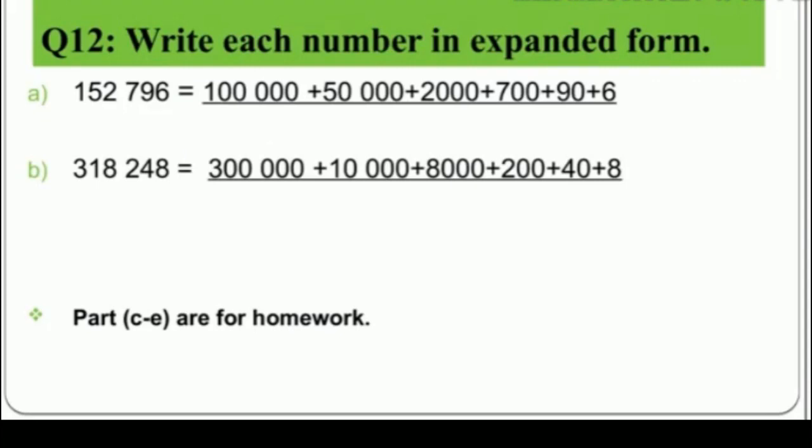Question 12: write each number in expanded form. Part A: 152796. The easy method: take the first digit (1), replace all remaining digits with zeros → 100000. Put a plus sign. Now take the second digit (5), replace the remaining digits with zeros → 50000. Put plus. Next digit 2 → 2000. Plus. Next digit 7 → 700. So far: 100000 + 50000 + 2000 + 700...